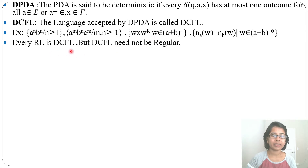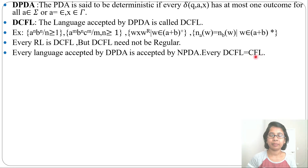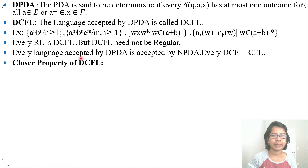Every regular language is DCFL, but DCFL need not be regular. Every language accepted by DPDA is also accepted by NPDA — every DCFL is also a CFL. The language accepted by NPDA is called CFL; by default, context-free language is accepted by NPDA rather than calling it NCFL. So: regular language is a subset of deterministic context-free language, and deterministic context-free language is a subset of context-free language.